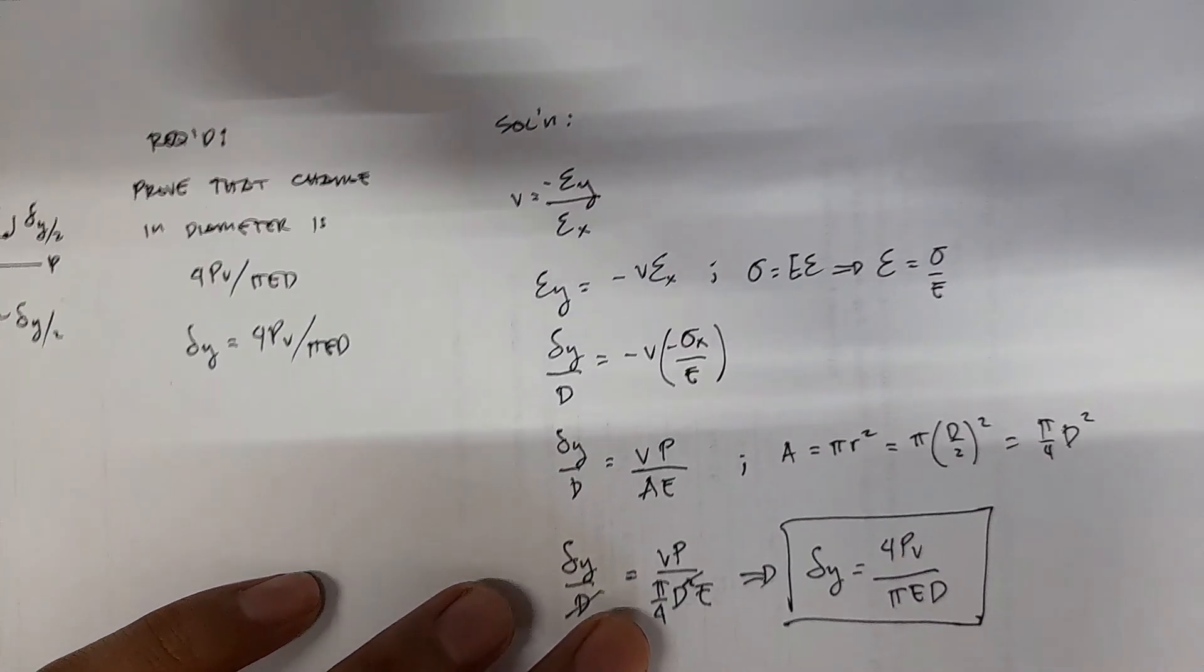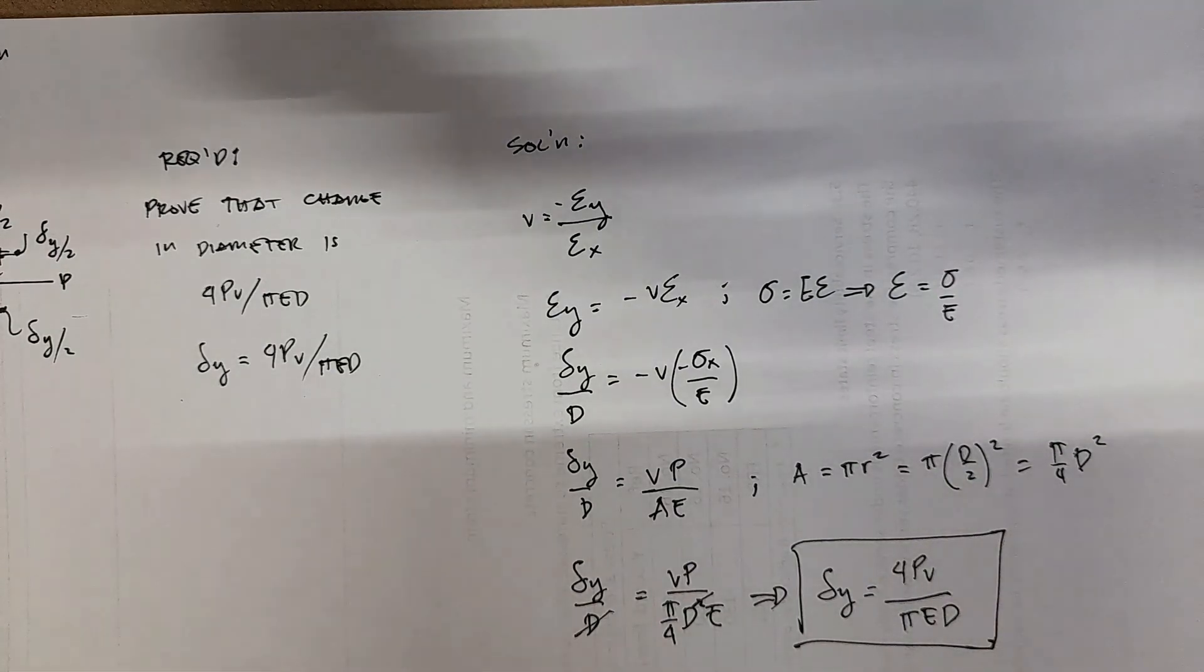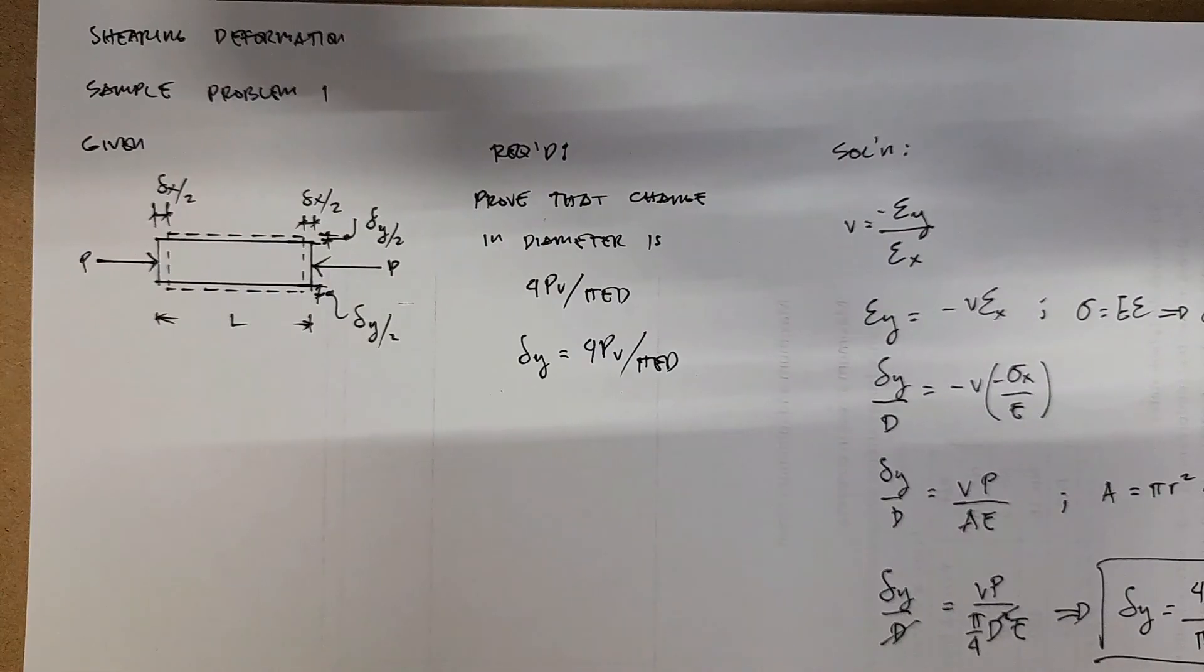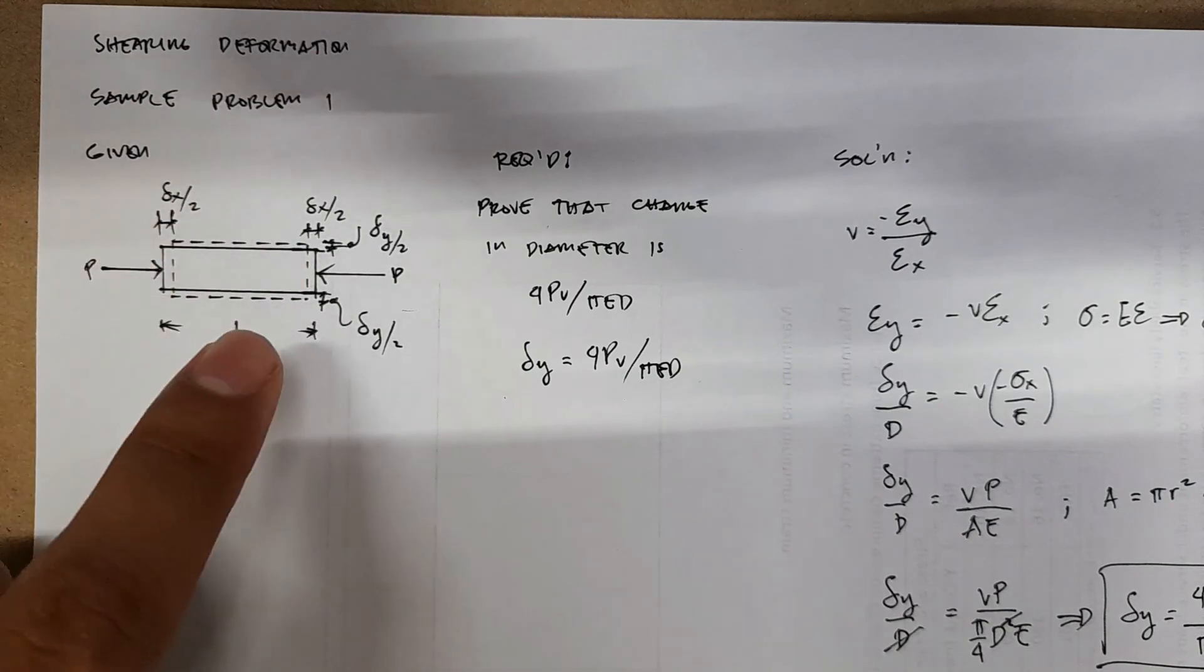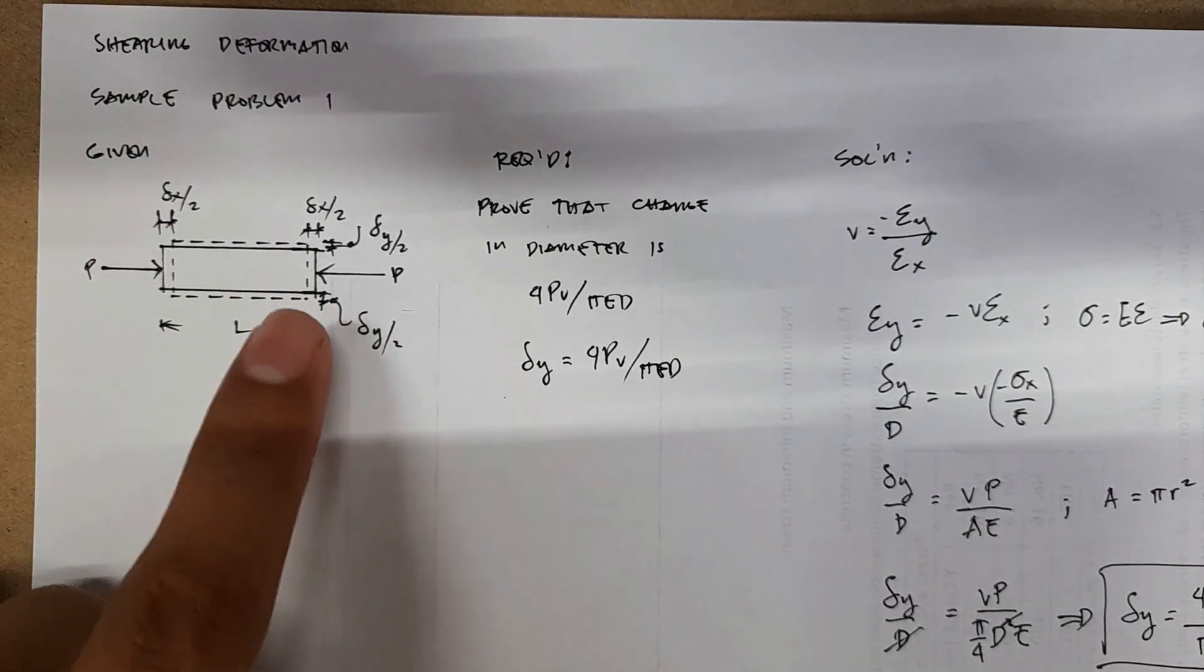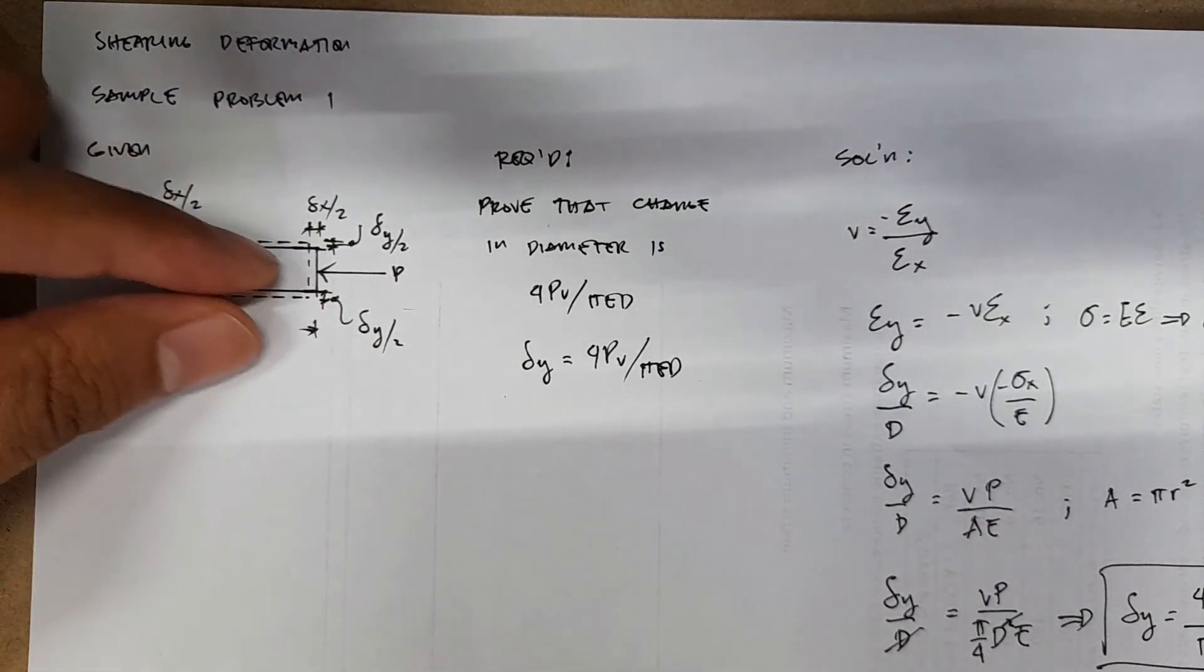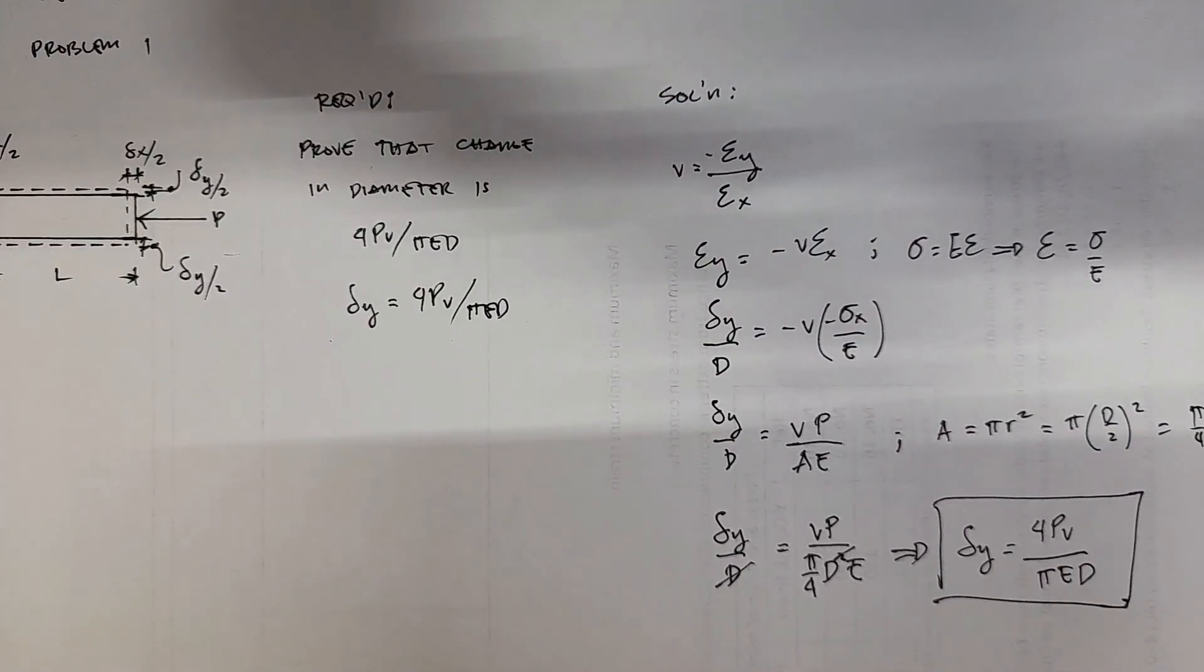So it's just a matter of using the Poisson's ratio and then the Hooke's law, and then other things is just algebraic manipulation. So that's one example for shearing deformation we have here. Again, this is a solid cylinder, and then you have force acting on both sides, compressive force. And then we're expecting a shortening in the x direction and lengthening in the y direction. So there, there we have the answer. Thank you.